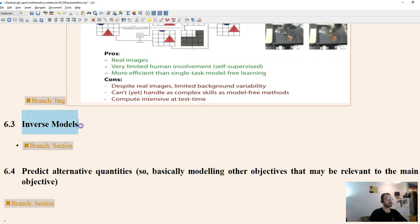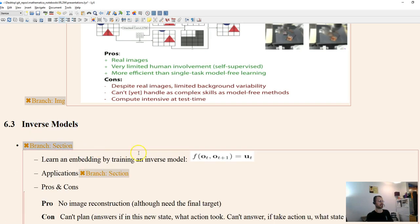So let's move ahead to inverse models. So what do you think an inverse model is? Maybe pause it and think about that. So an inverse model is where you're given the current state and the next state, and you are trying to guess what action happened in between. And so this allows us to learn an embedding, this allows us to learn a latent space.